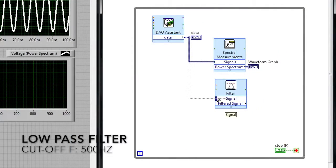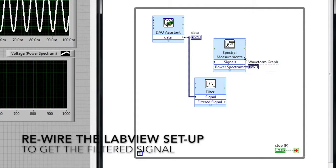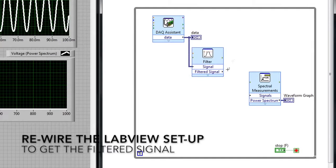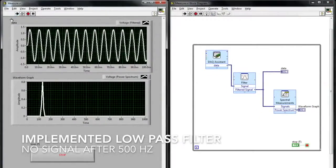Now I can wire my output data to that input terminal on the filter Express VI. Next I'm going to break the wires that are going to the spectral measurements VI, because what I really want to now do is send the filtered signal over to the Express VI to measure the frequency domain data as well as the time domain graph. I can delete that and rewire the data there.